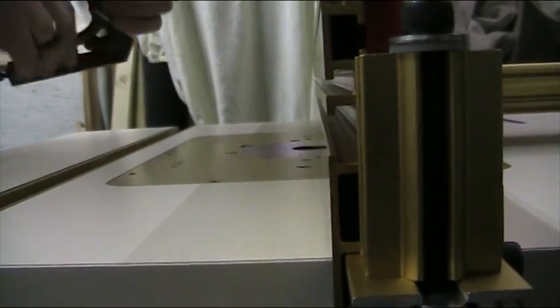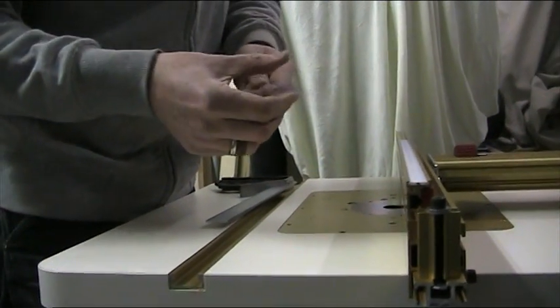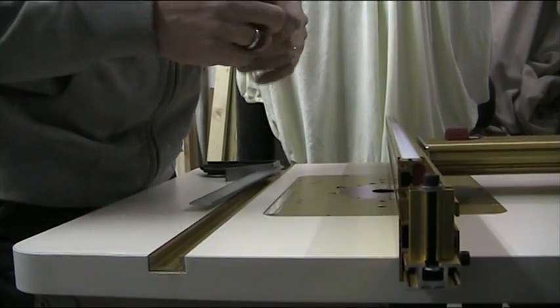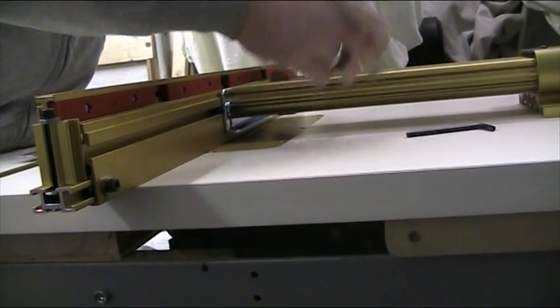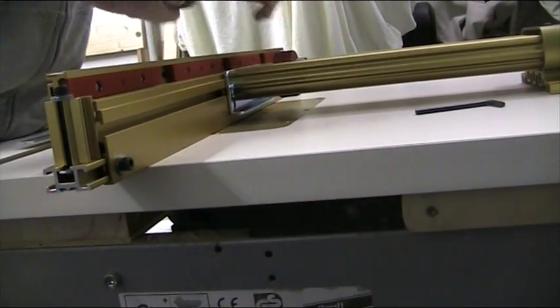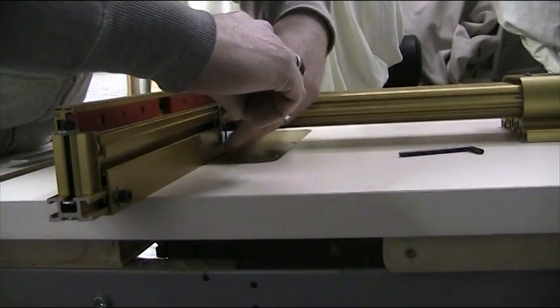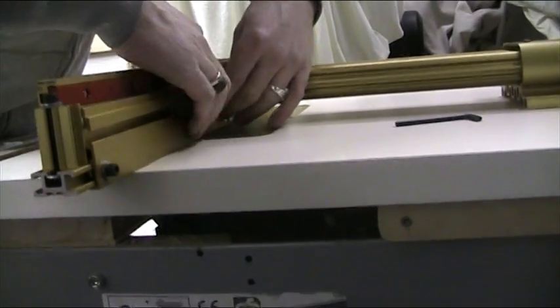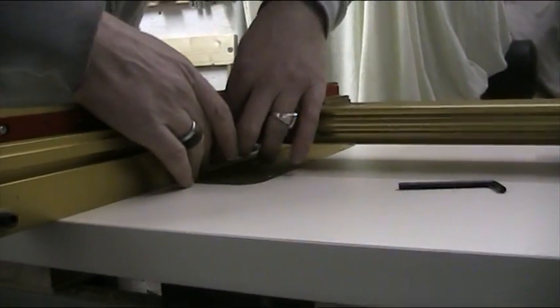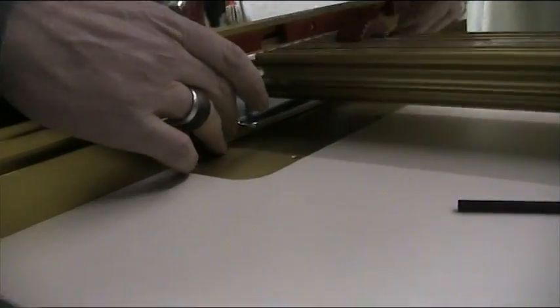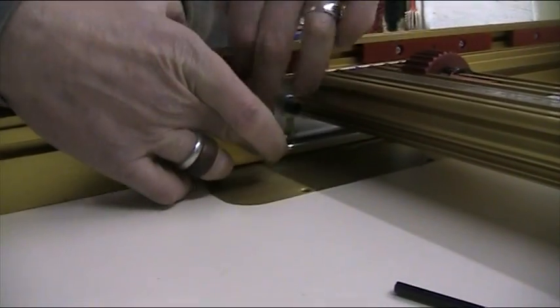So Incra will provide a set of plastic shims here, and it's a matter of just packing in between the fence and the positioner, packing enough of these shims in order for this to be 90 degrees. So we're just going to put one shim in for now. They slide in very easily. It's a matter of tightening these nuts.